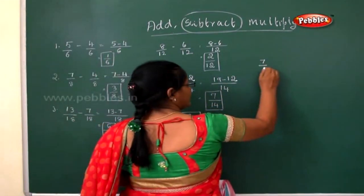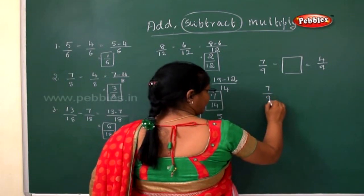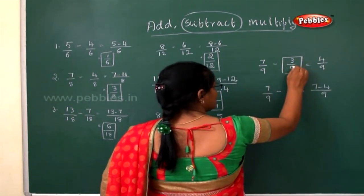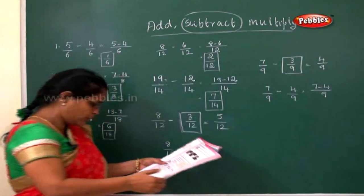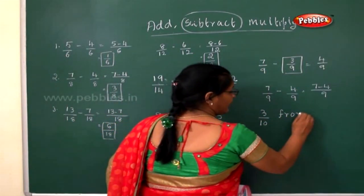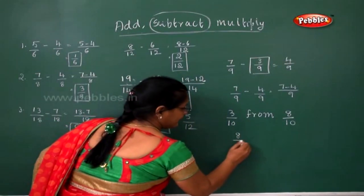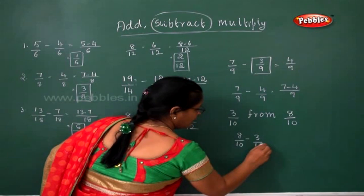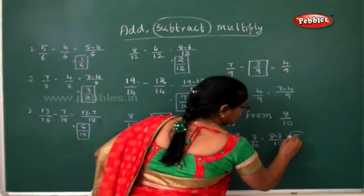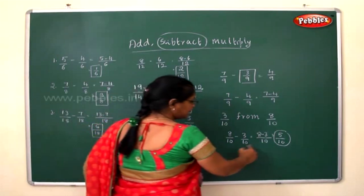Next: 8/12 minus y/12 equals 3/12 — so 8 minus y equals 3, meaning y equals 5. Next: 7/9 minus dash equals 4/9 — so 7 minus 3 equals 4, so the missing fraction is 3/9. Can you subtract 3/10 from 8/10? Yes: 8/10 minus 3/10 — common denominator is 10, and 8 minus 3 equals 5, so the answer is 5/10.